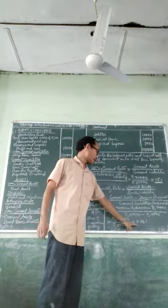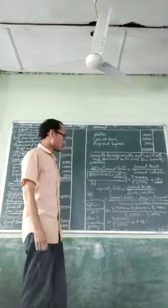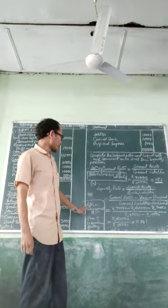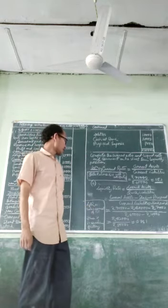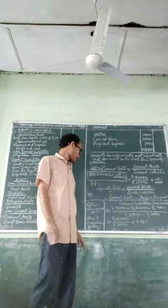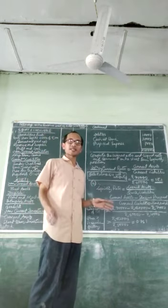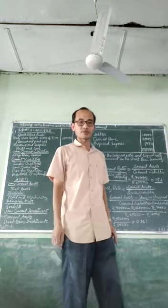The liquid ratio figure is Rs.43,000 divided by Rs.50,000, which equals 0.86 is to 1. Therefore, the liquid ratio is below the normal of 1 is to 1. Thus, we can say that the liquid ratio of the company is not satisfactory. With this, I finish my talk for today. Thank you very much.